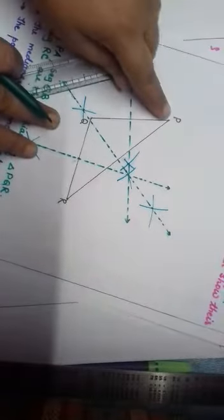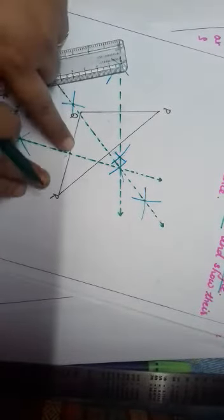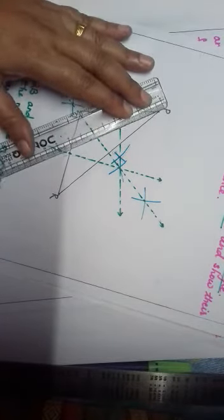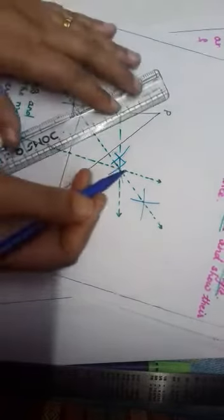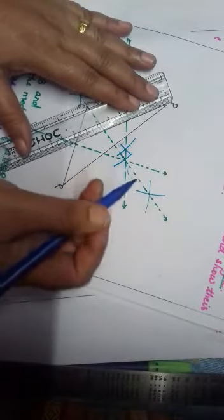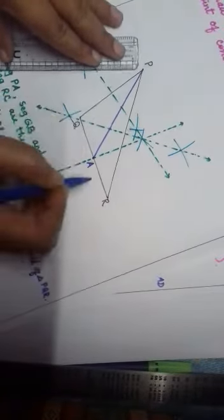To draw the median, we have to join a segment from the vertex to the midpoint of the opposite side. So let us join median from vertex P to the midpoint of opposite side QR. This is our midpoint — let us give it the name A. The median from P is now complete.